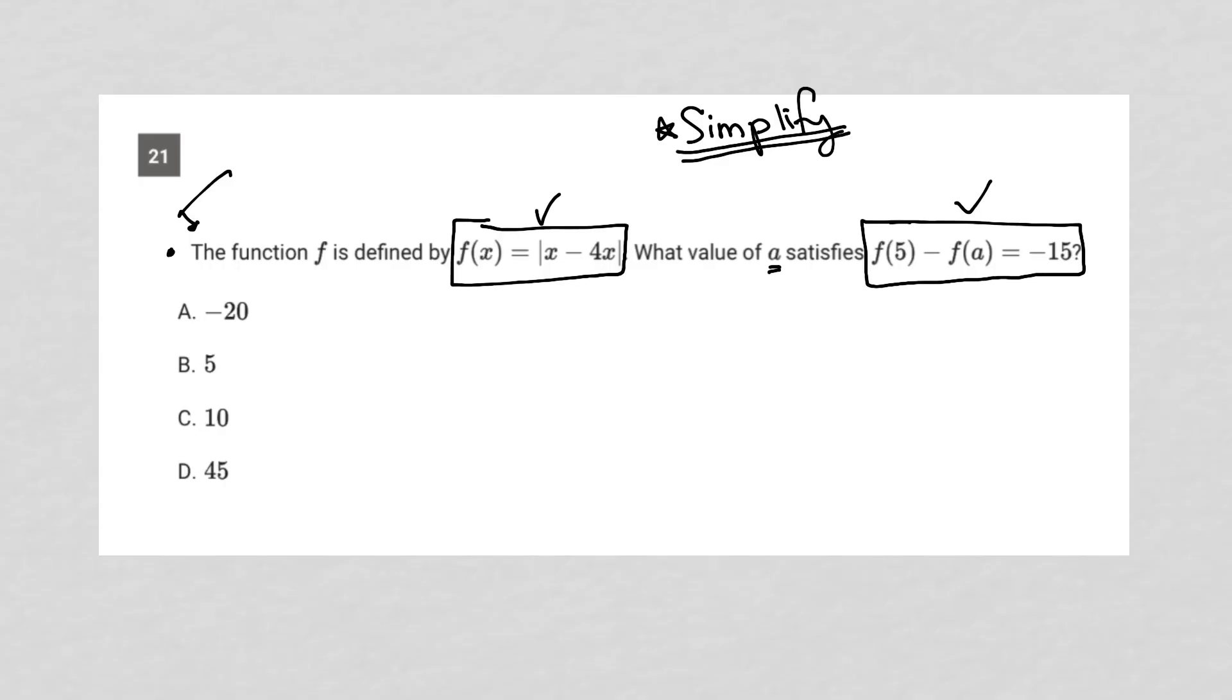So how do we simplify this function here? Well, x minus 4x can be combined. So this can become f of x equals the absolute value of negative 3x. I can't simplify that any further. While I do have a negative sign here, you might think to yourself that the absolute value just makes everything positive, and that's true. But because we do not know the value of x, I can't simply remove the absolute value symbol and say f of x equals 3x. This is not simply equal to 3x. I have to leave it like that. So that's all I can do in terms of simplifying this here.